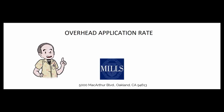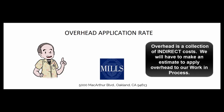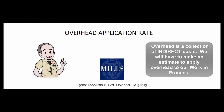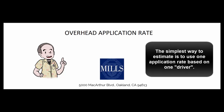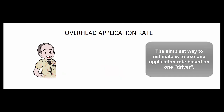If we're a manufacturer using job order costing or even process costing, we're going to need to estimate how much overhead gets applied to each job or each process. The beginning point for that is to have one rule — one application rate — for one pool of manufacturing overhead.